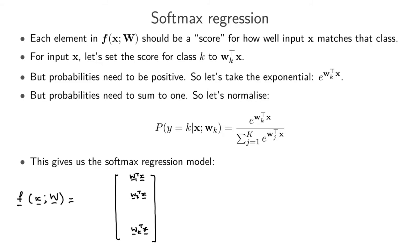The problem with using w_k^T x as scores directly is the same problem we had with binary logistic regression: these values are not valid probabilities — they can be negative or positive. So let's convert them into positive values by taking the exponential. The score for the first class becomes e^(w_1^T x), and so on up to e^(w_K^T x), taking the exponential for each class.